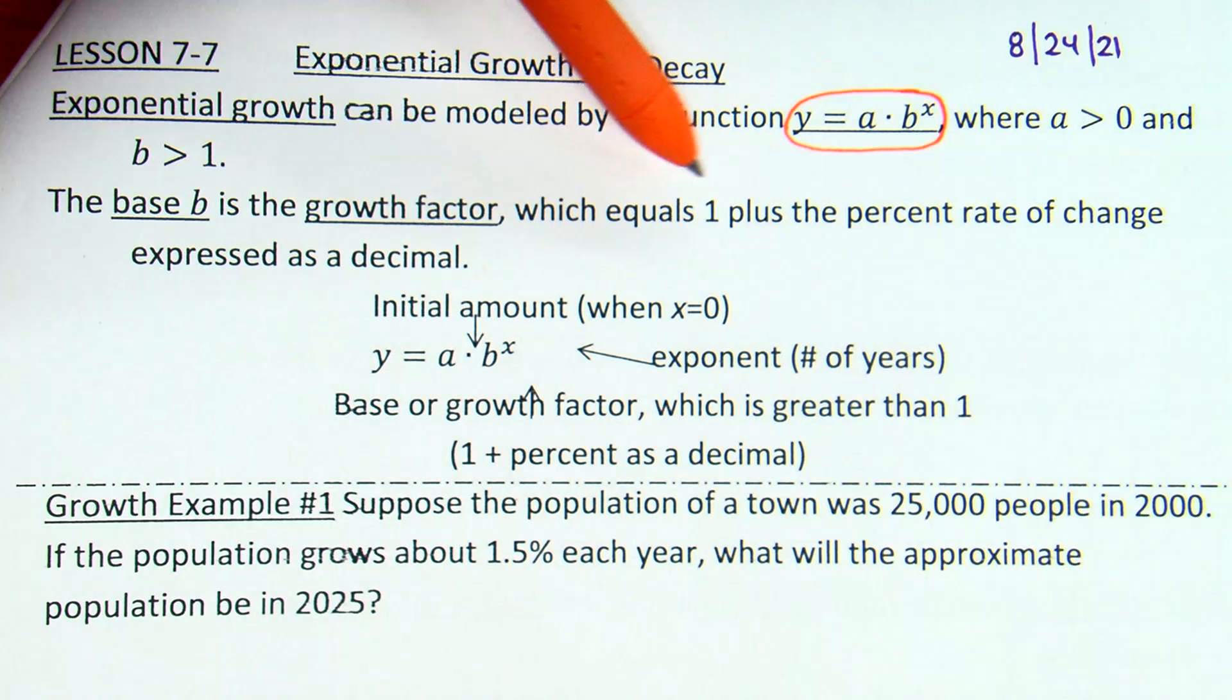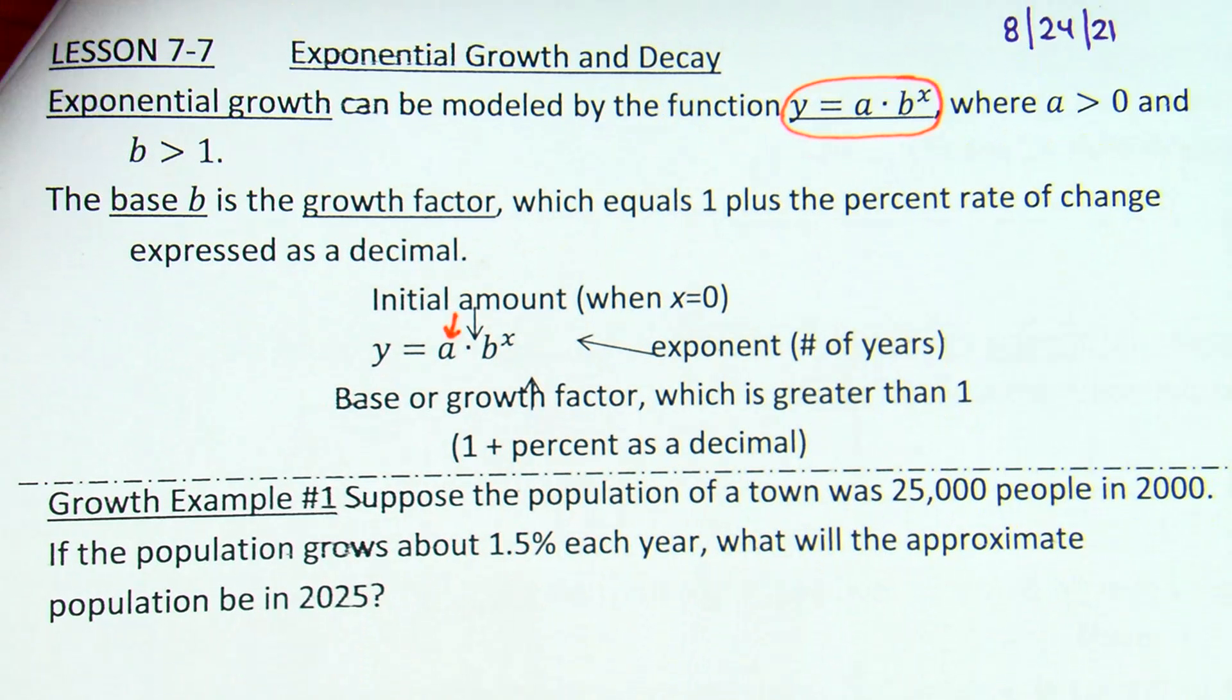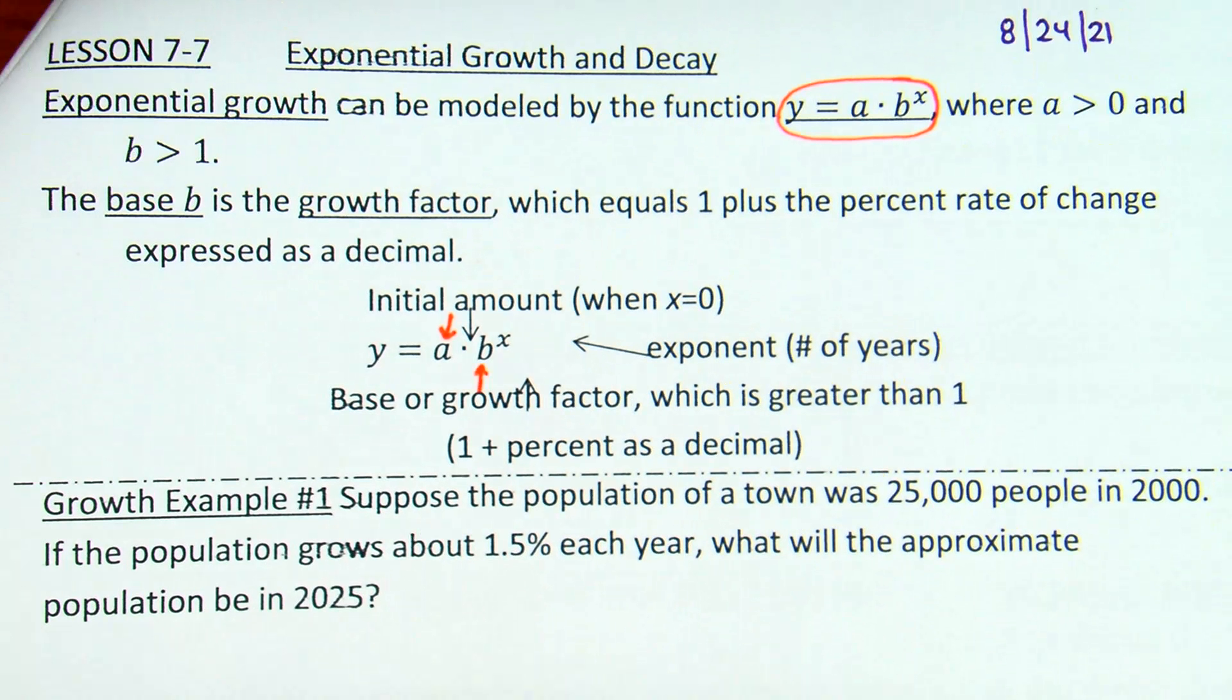So, it was showing right when I edited it, and then when I copied it, it got off. Okay, so this is supposed to say that the initial amount is a right here. My arrows got off when it printed. B is the base or the growth factor. If it's a growth factor, it's always greater than one because it's one plus the growth.